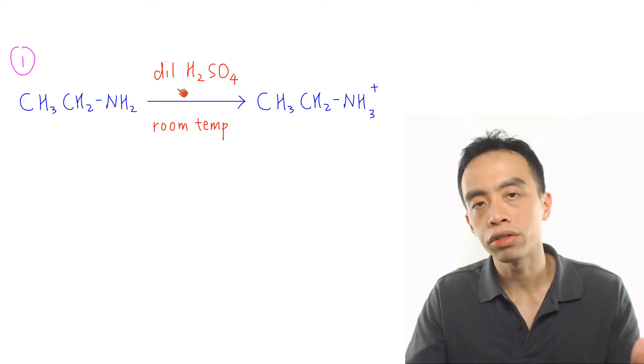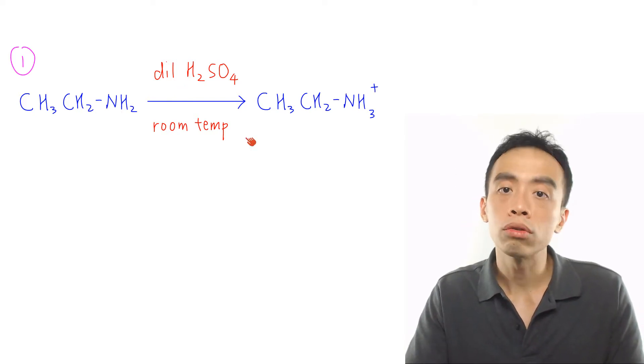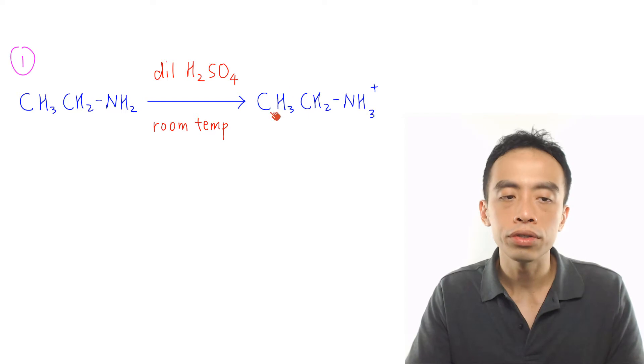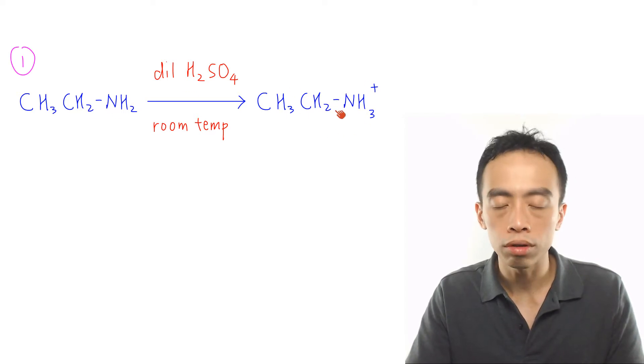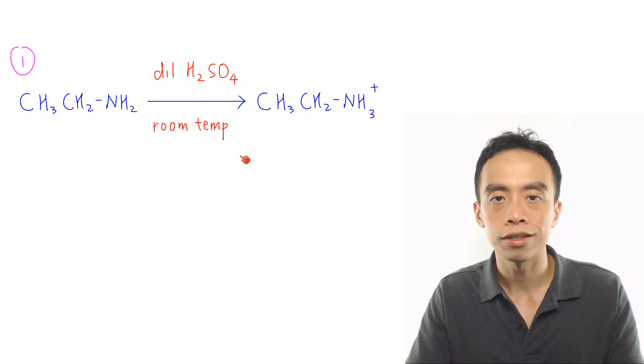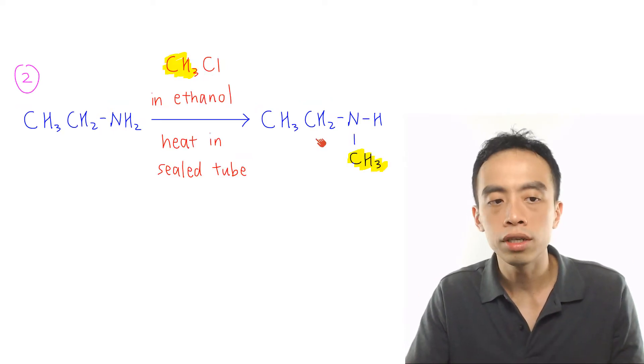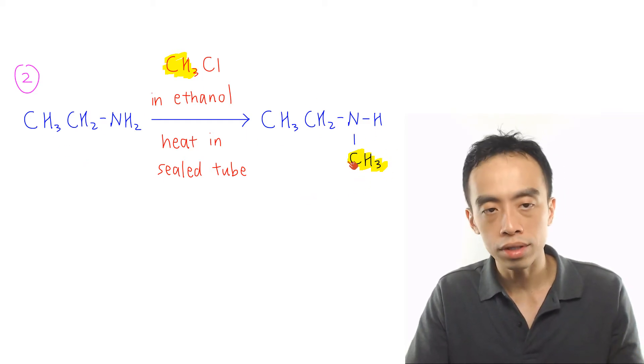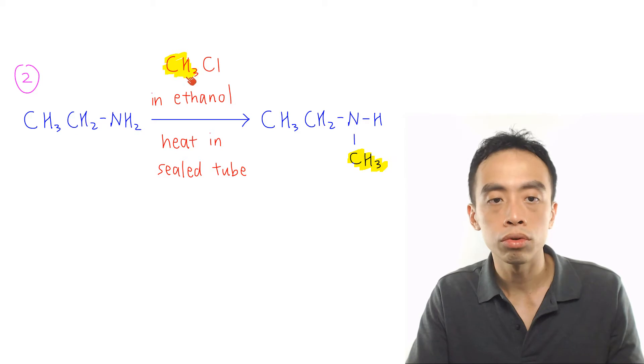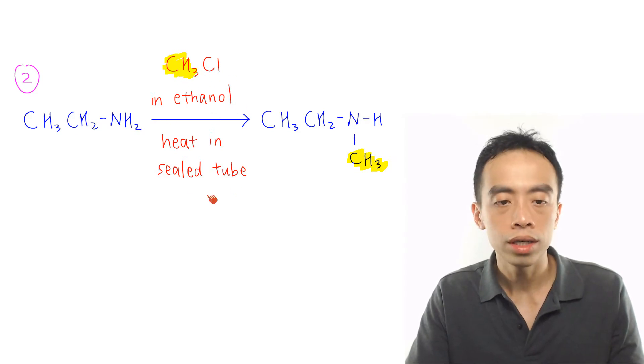First, let's talk about the reactions of amines. The first reaction of amine is the neutralization of amine to form ammonium salt. This is done using dilute H2SO4 at room temperature. Second reaction is the nucleophilic substitution of primary amine to form secondary amine. This is done using chloroalkane in ethanol, heat in a sealed tube.